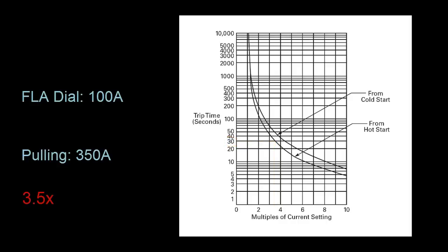Now in my example, the motor was pulling a continuous 350 amps, but motors don't always behave this way. The current can fluctuate. It may start off pulling 350 amps, then drop to the nominal 100 amps, then something causes it to shoot up to 200.